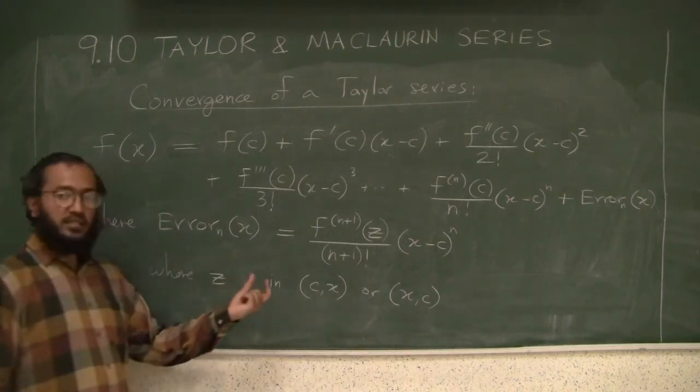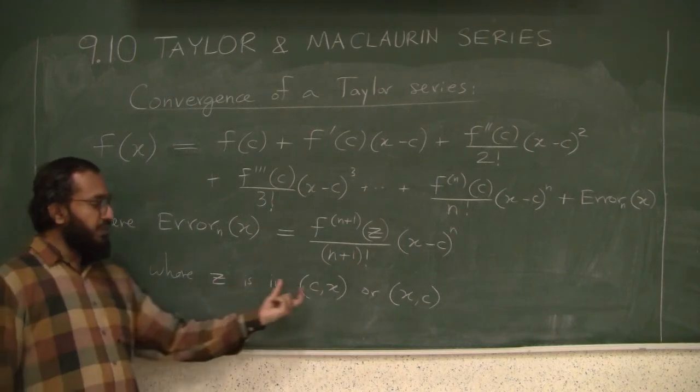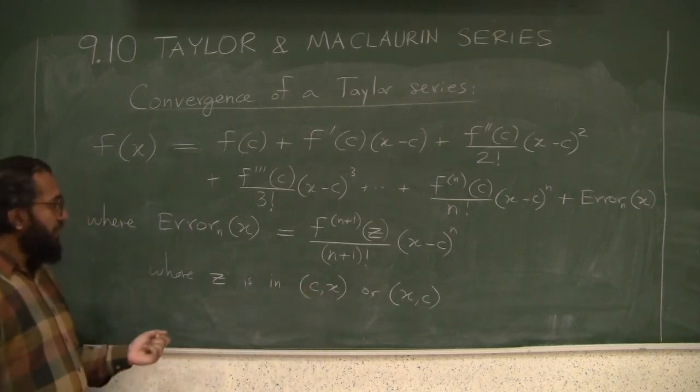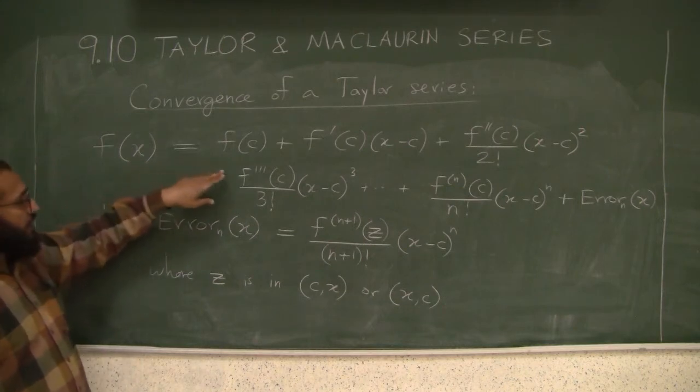Where z is in the interval cx or xc. Because x is near c, so x could be bigger than c or less than c, so in the appropriate interval z is some number there.